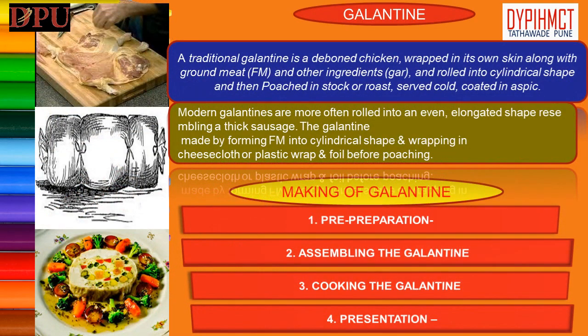Galantines. A traditional galantine is a deboned chicken wrapped in its own skin along with ground meat and other ingredients like garnishes, rolled into a cylindrical shape, then poached in stock or roasted and served cold, coated with aspic. The preparation of galantine is divided into three stages. Stage 1 — Preparation: Bone the chicken by cutting through the skin along the length of the backbone, keeping all meat attached to the skin. Remove the wings and leg by cutting through the joint. Cut off the wings, bone the thigh and leg, trim the skin to form a large rectangle. Marinate the breast meat and skin for three hours with brandy, white wine, curing salt, salt and pepper. Prepare the stock from the bones and prepare the force meat.